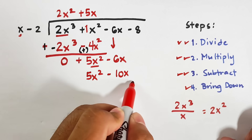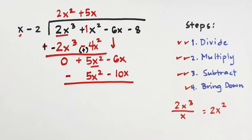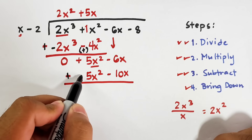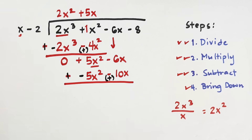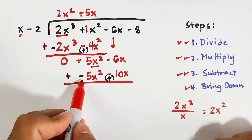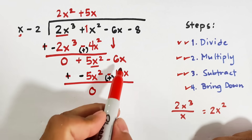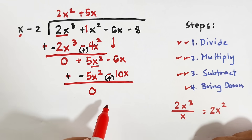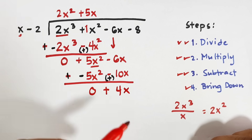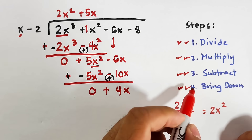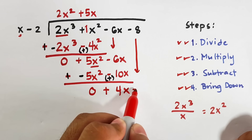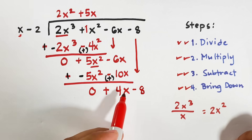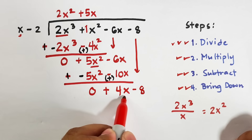Now we subtract this entire polynomial. Again the signs change — from positive to negative and from negative to positive. So 5x squared plus negative 5x squared is 0, and negative 6x plus positive 10x gives plus 4x. Then we bring down negative 8.